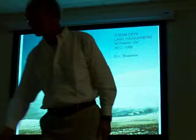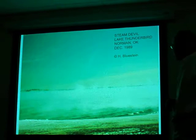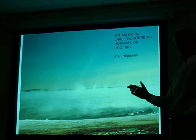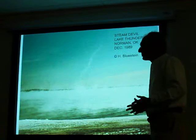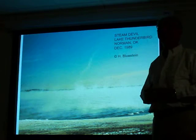Another phenomenon: steam devils. This is Lake Thunderbird on the eastern part of Norman. In December of 1989 it had been fairly warm — about 70 degrees — so the lake temperature was probably in the 60s. Back then, temperatures could drop below zero. The wind was blowing 40–50 miles an hour, and I thought there might be arctic sea smoke at the lake, so I ran out to check.